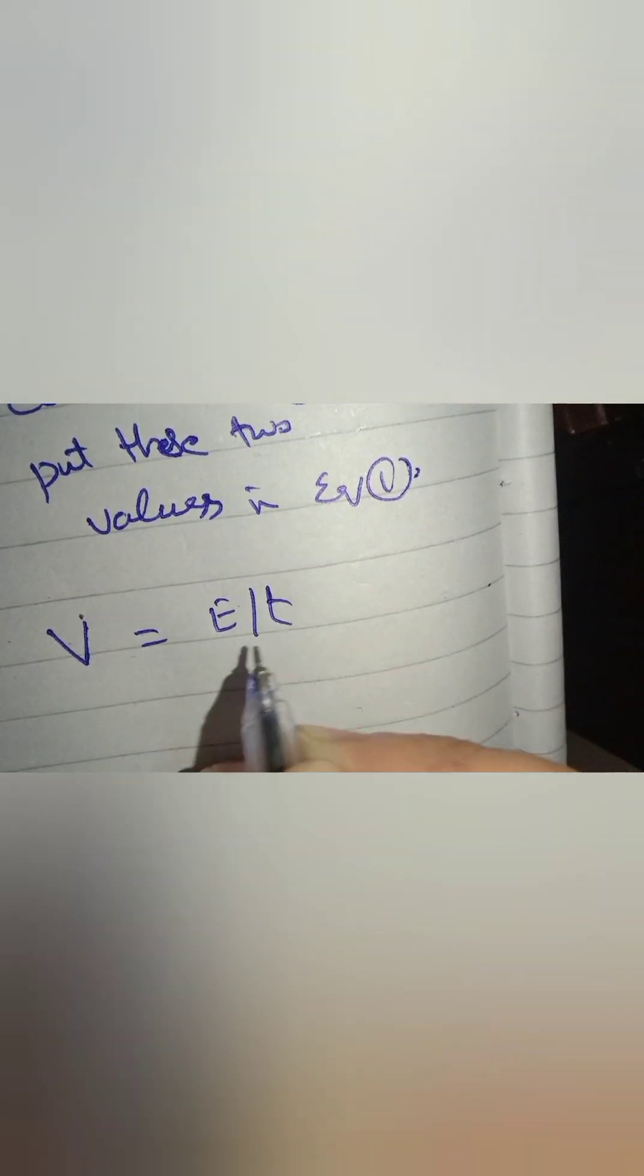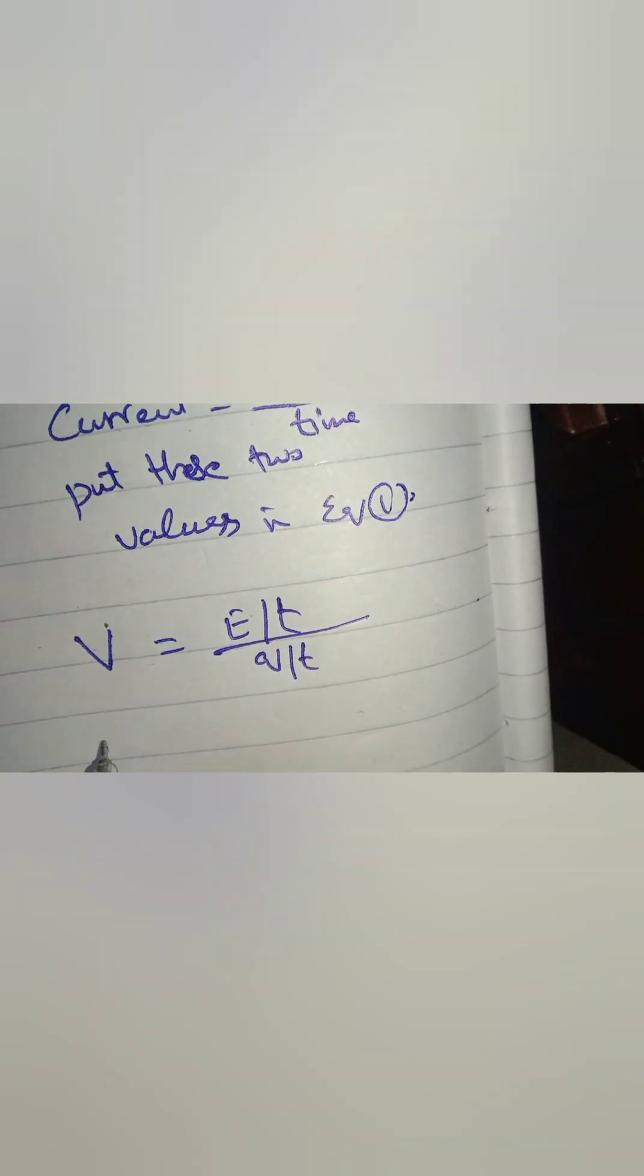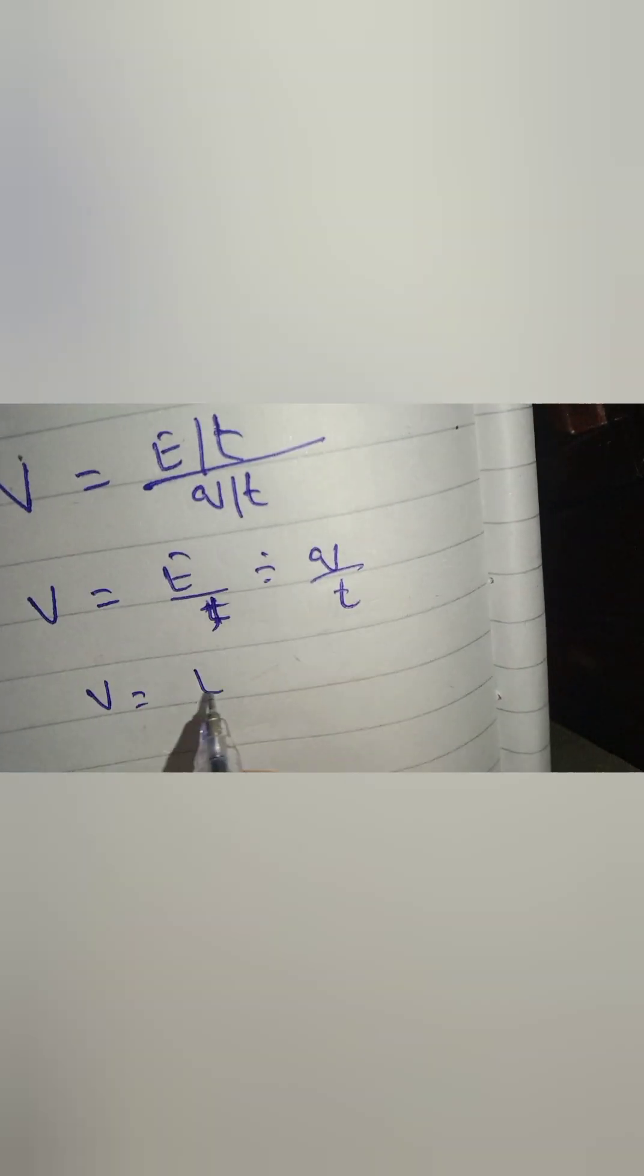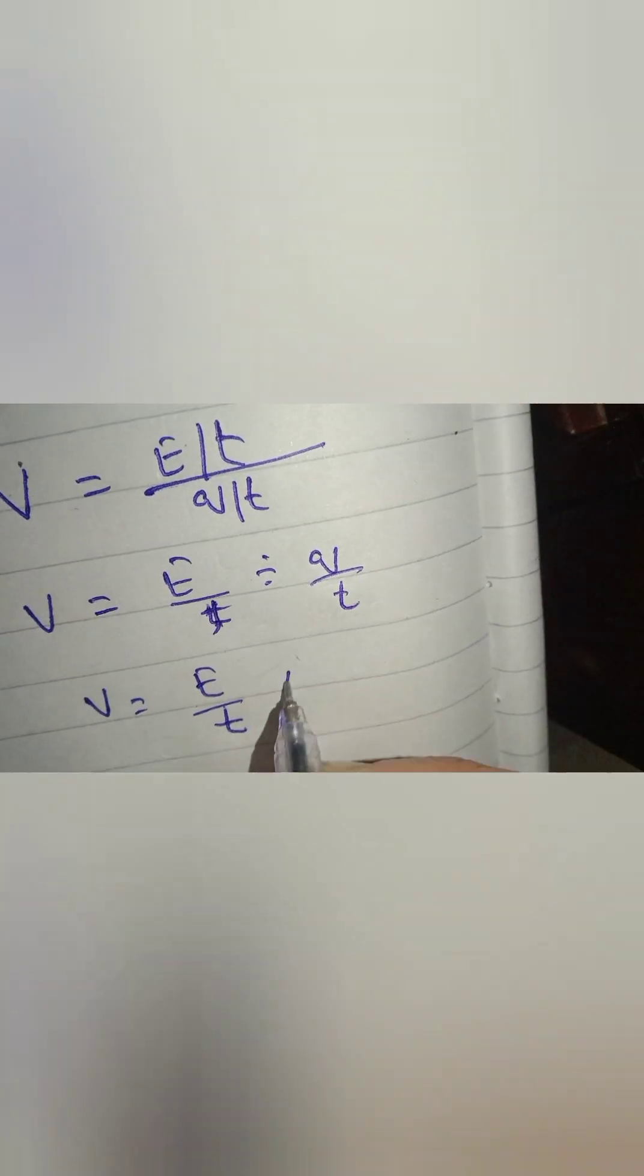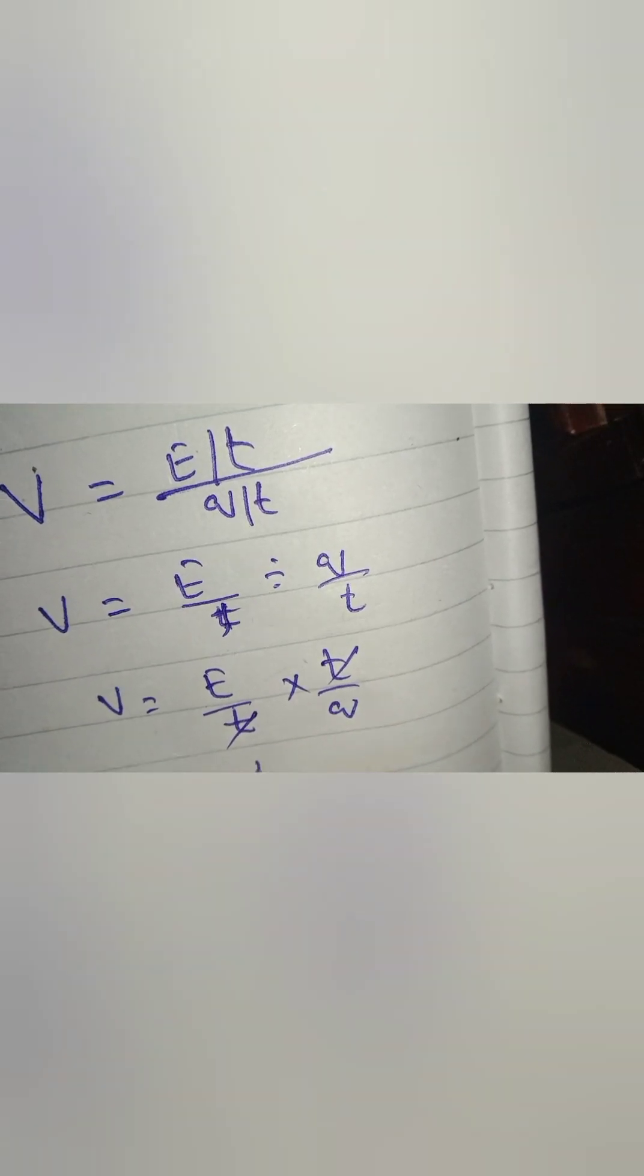This is the value of P and this is the value of current. We arrange the numerator and denominator. Now replace divide with multiply - t and t gets cancelled. You are left with voltage equals energy per unit charge.